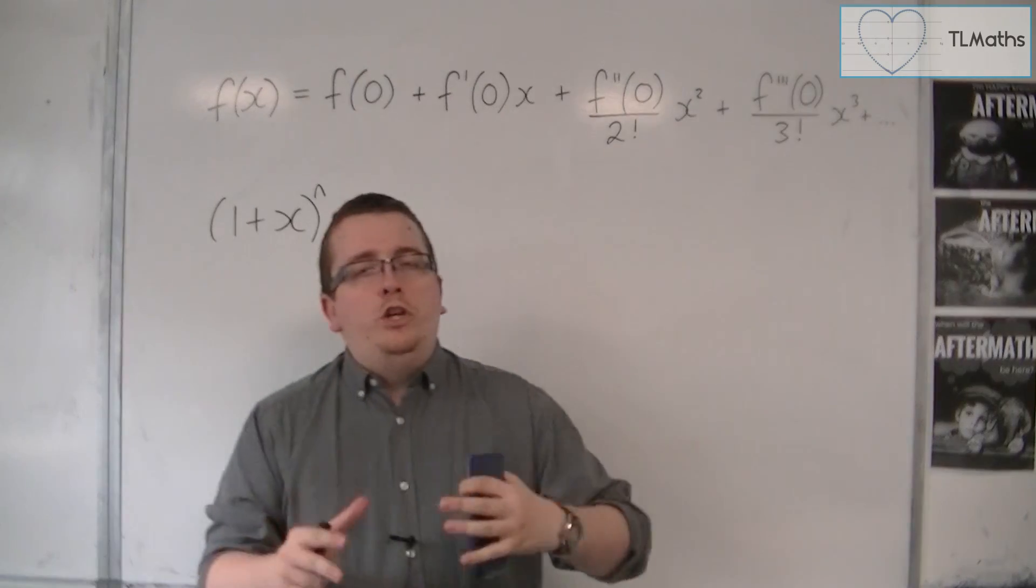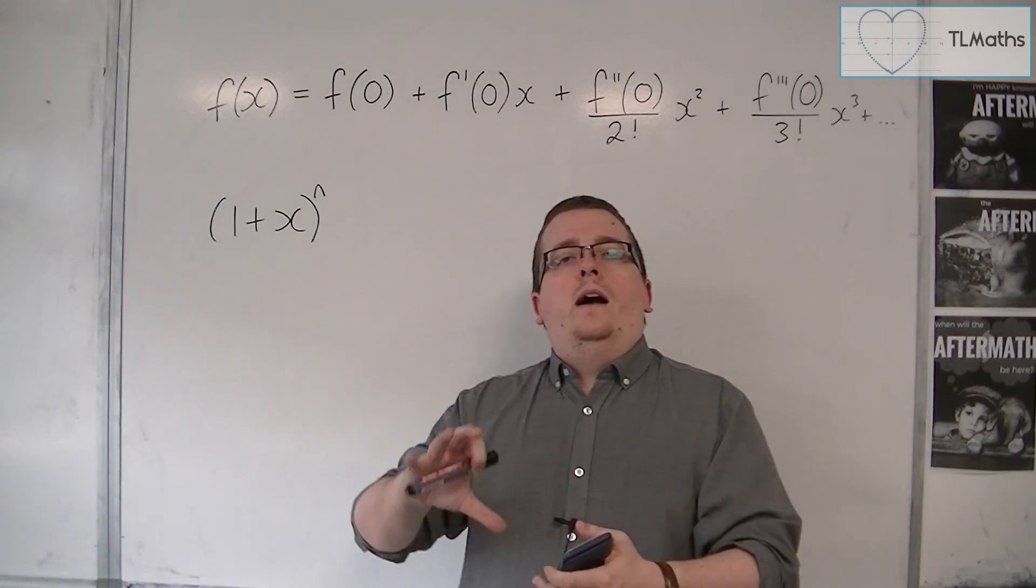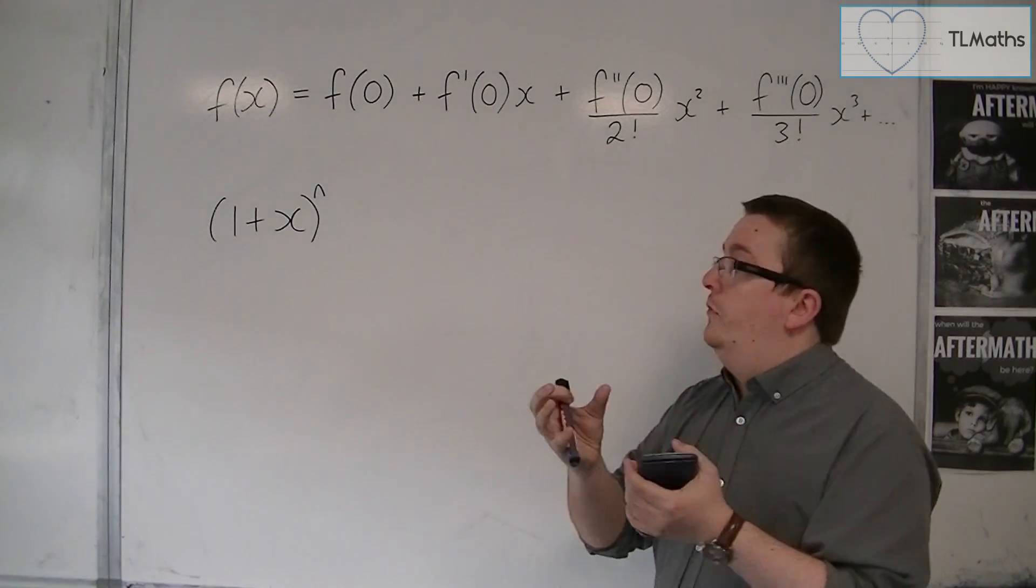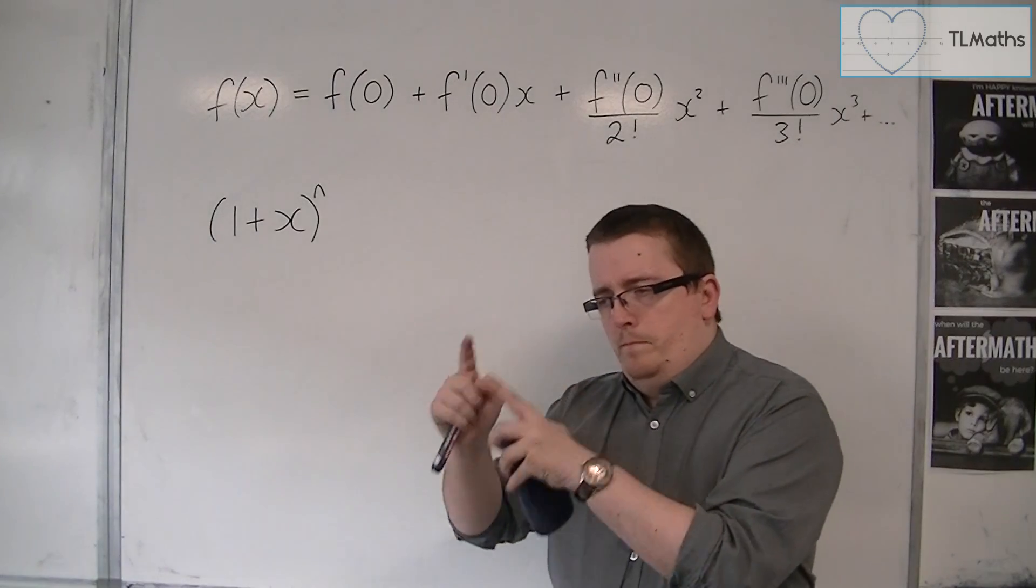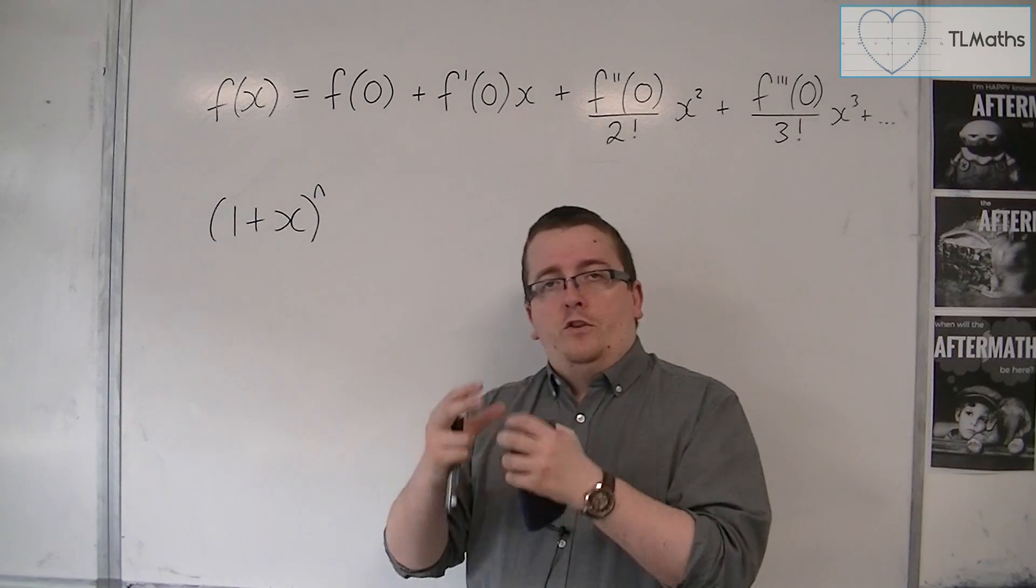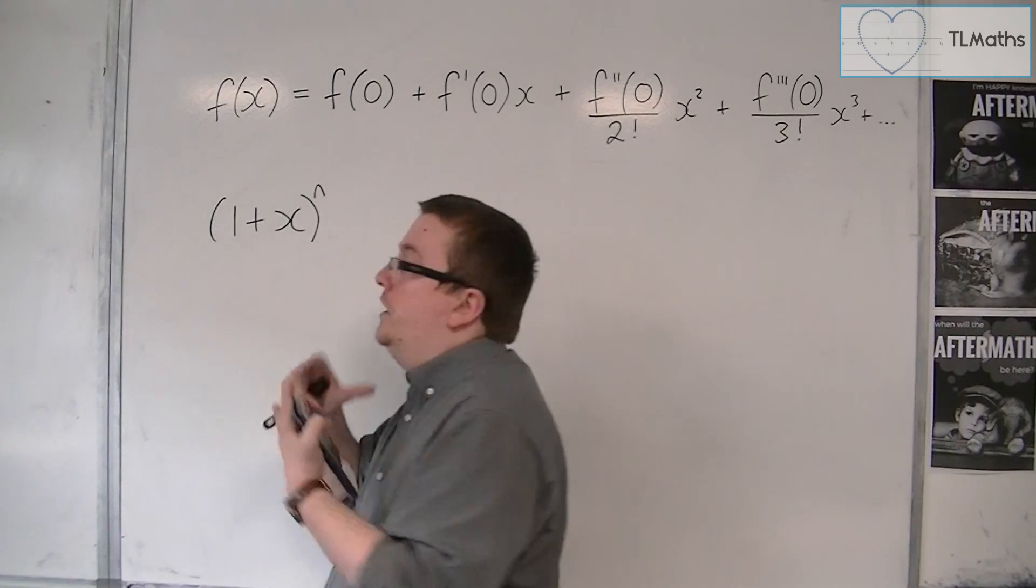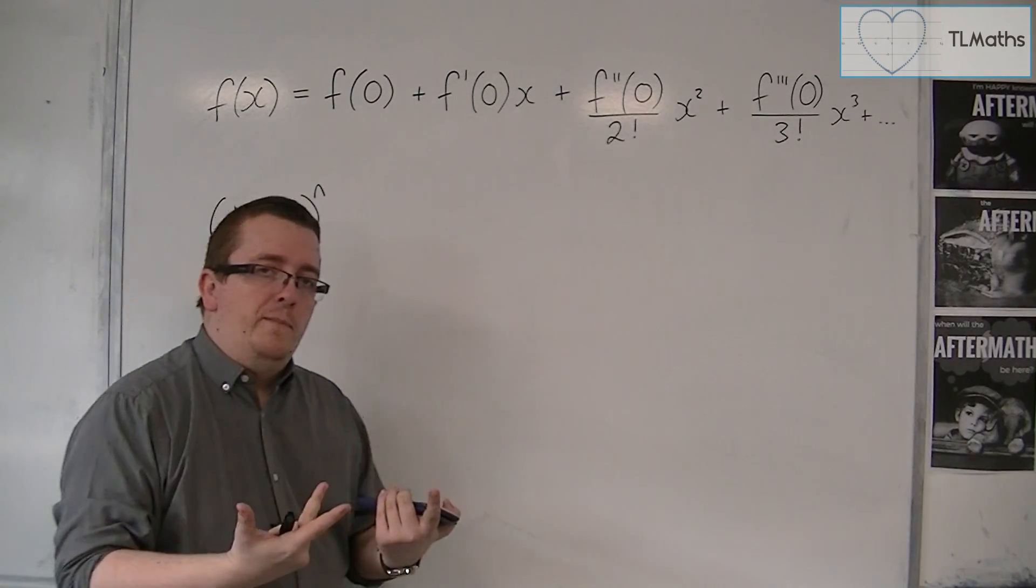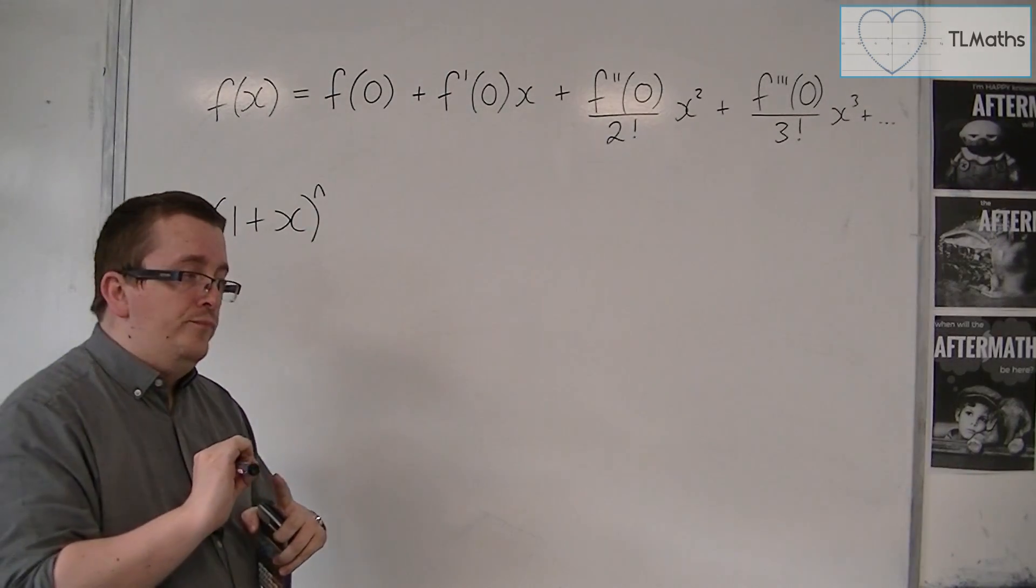So effectively what you can do is you can use this to approximate a curve, so for small amounts, so for parts close to 0. So if you're looking at the curve like sine x or cosine of x, then you could use a McLaren series to approximate the curve close to 0 by a polynomial.